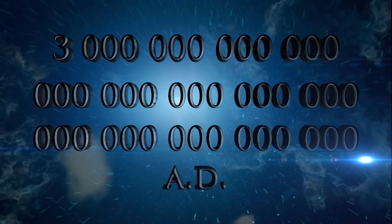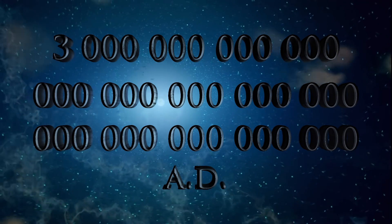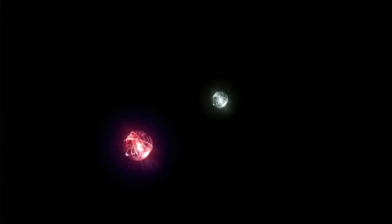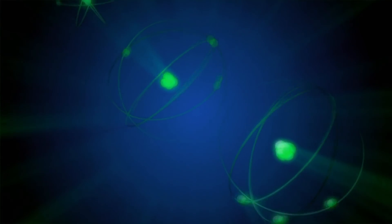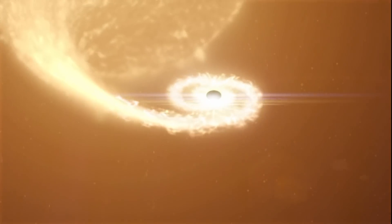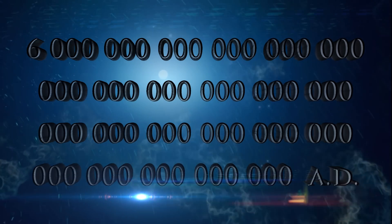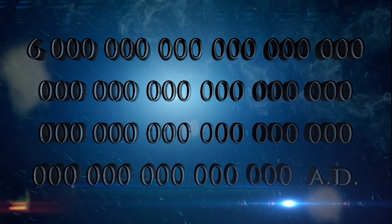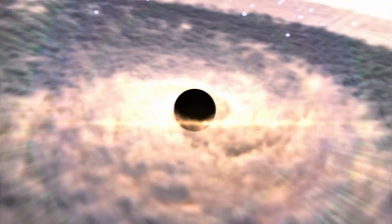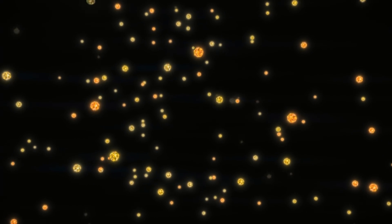Three tredecillion years from now, the year is 30 followed by 42 zeros of our era. Estimated time for all nucleons in the observable universe to decay. By this time, if protons do decay, the black hole era, in which black holes are the only remaining celestial objects, begins. Six duovigintillion years from now, estimated time until a stellar mass black hole with a mass of three solar masses decays into subatomic particles by the Hawking process.